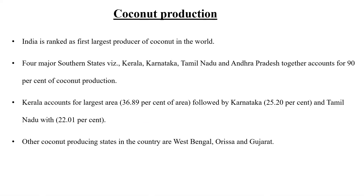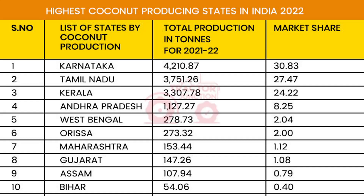Regarding coconut production, India is ranked as the first producer of coconut in the world. The southern states of our country are the largest producers of coconut, because the geographical conditions required for the growth of coconut are fulfilled in those southern states. The following slide shows a chart about the highest coconut producing states in India, marked in 2022, with Karnataka having a market share of 30.83% of coconut production.